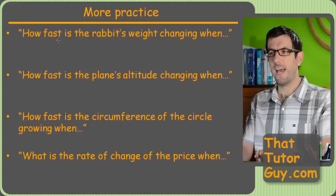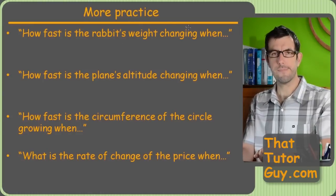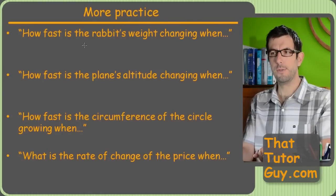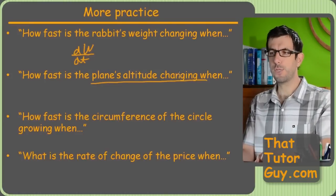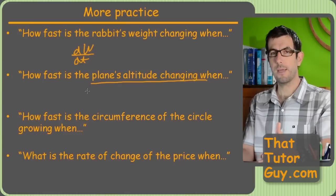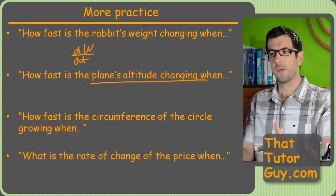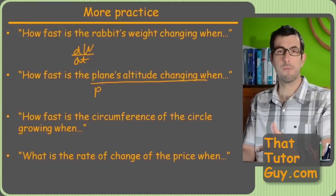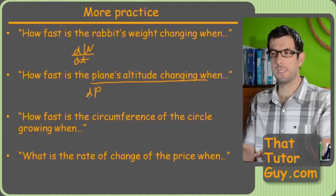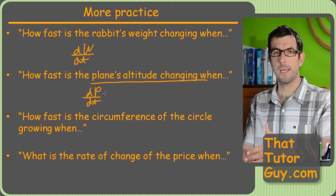Let's do some more. How fast is the rabbit's weight changing? Hmm. Well, W seems like a good letter for weight. So, let's just see how fast that's changing with respect to time. How fast is the plane's altitude changing? I don't know. Let's call it, you know, we already used capital A for altitude. We could use A again, or we could just use P or something, like maybe P for plane's altitude. I don't know. So, that'd be dP/dt. Doesn't matter what letter you pick, because what's going to happen is on these problems, you always have a diagram.